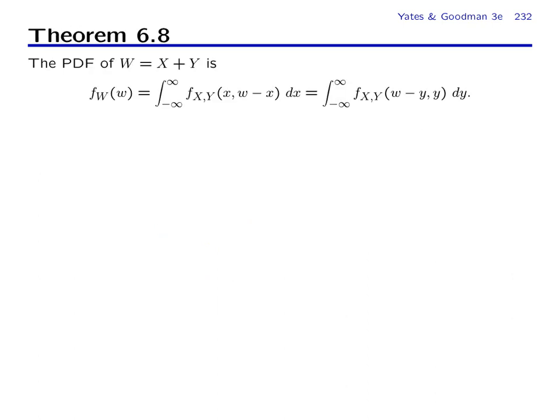So right out of the gate we hit you with kind of a strong theorem. The theorem says that the PDF of W is the result of doing a line integral on the joint PDF, and the key idea in this joint PDF is that we take x and we add y, but y is equal to w minus x. So in fact this is x plus w minus x and it's equal to w.